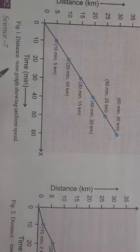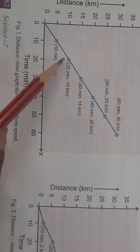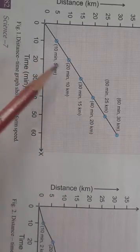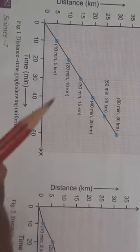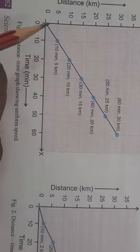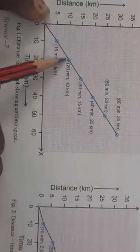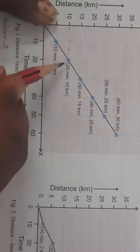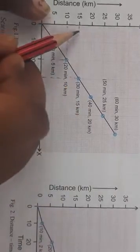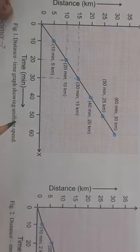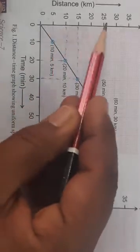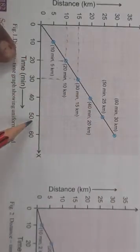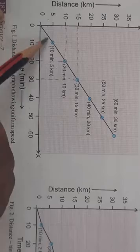Now another graph is given. Here you can see that the distance-time graph is a straight line. A straight line indicates that the particular vehicle is moving with uniform speed. After 10 minutes it covered 5 kilometres, after 20 minutes it covered 10 kilometres, after 30 minutes it covered 15 kilometres. At regular equal intervals of time this vehicle is covering equal distances, which is why we get a straight line.